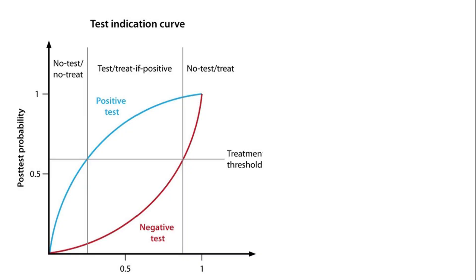A negative result reduces the likelihood, helping us avoid unnecessary treatment. On the right side of the curve, where the pretest probability is high, we are in the no-test-treat zone. Here, the disease is so likely that we proceed with treatment regardless of testing. A negative test would not reduce the probability enough to alter management. The horizontal line marks the treatment threshold, the point at which the probability of disease is high enough that the benefits of treatment outweigh the risks.